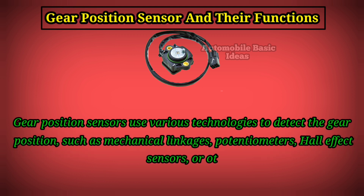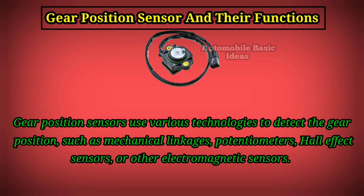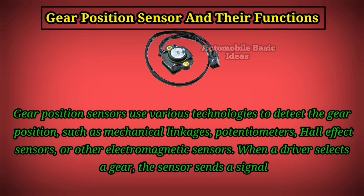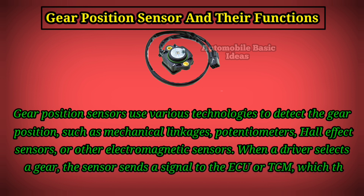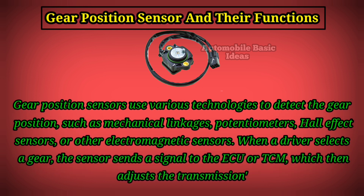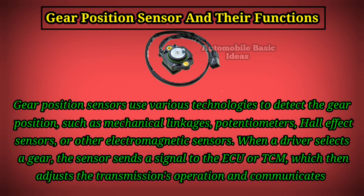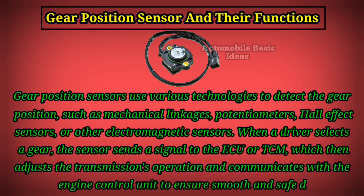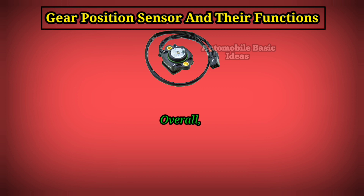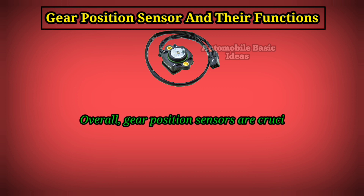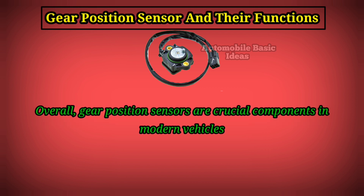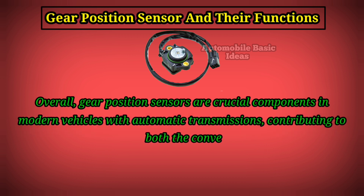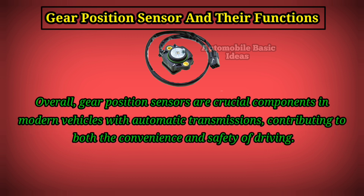When a driver selects a gear, the sensor sends a signal to the ECU or TCM, which then adjusts the transmission's operation and communicates with the engine control unit to ensure smooth and safe driving. Overall, gear position sensors are crucial components in modern vehicles with automatic transmissions, contributing to both the convenience and safety of driving.